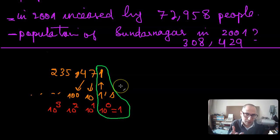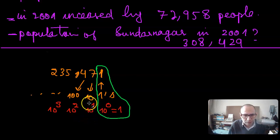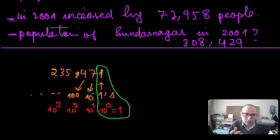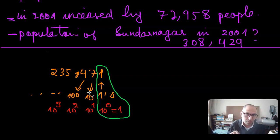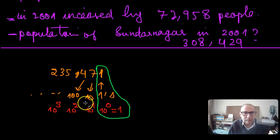Think of it this way: the ones place means you have bags that each contain only one marble. The tens place means each bag contains 10 marbles — you don't have to recount, because you already know there are exactly 10 marbles in every bag in that category. So if you have seven of those bags, seven times 10 is 70 marbles in total.